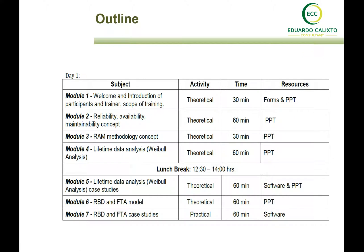Let me now present the details about the training outline. Module 1 is the introduction. Module 2 is the RAMS concept. Module 3 goes through all the steps to implement the reliability RAMS methodology. Module 4 covers lifetime data analysis concepts, including collecting historical failure and repair data and how to predict reliability and maintainability. Module 5 has lifetime data analysis case studies applied to railway industry physical assets. Module 6 covers RBD and FTA model concepts. Module 7 has case studies applying RBD and FTA.